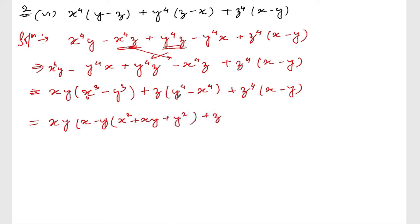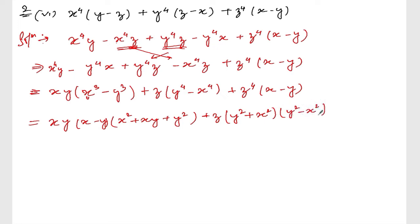From this one, I can take plus z common, and y to the power 4 minus x to the power 4 can be written as (y square plus x square)(y square minus x square). So y square minus x square, plus z to the power 4 times (x minus y).